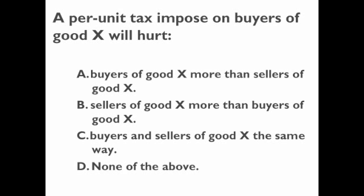We are talking about taxes. With a per unit tax imposed on buyers of good X, who is hurt more? The key here is that we can't really tell the answer because we need to know something about elasticity. That's why the answer is none of the above — or more precisely, we don't have enough information. In order to choose either A, B, or C, we need to know about the elasticity of demand or supply, because that's what determines who pays what.